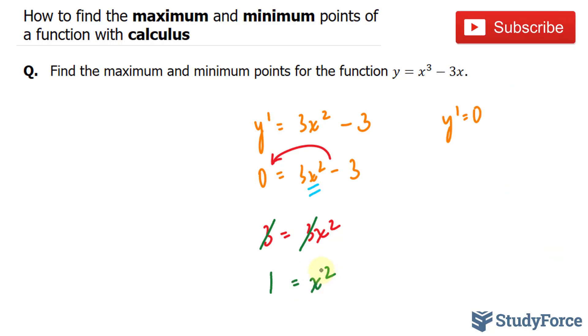The last step is to take the square root of both sides, and if we do that we end up with x is equal to plus minus 1.